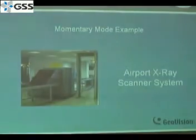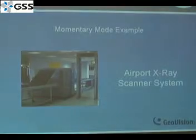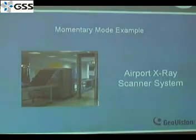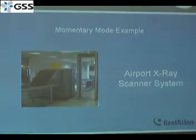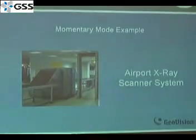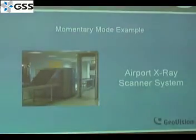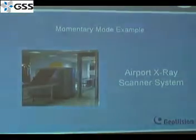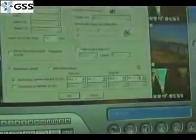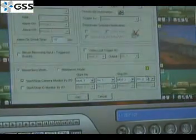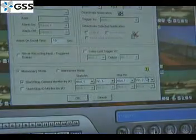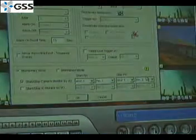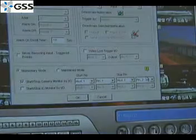When luggage enters the scanner, it triggers one input signal to start recording. Once the luggage exits the scanner, it triggers another input to stop the recording. So basically, one way in, one way out. For situations like this, you can use momentary mode to monitor your object.